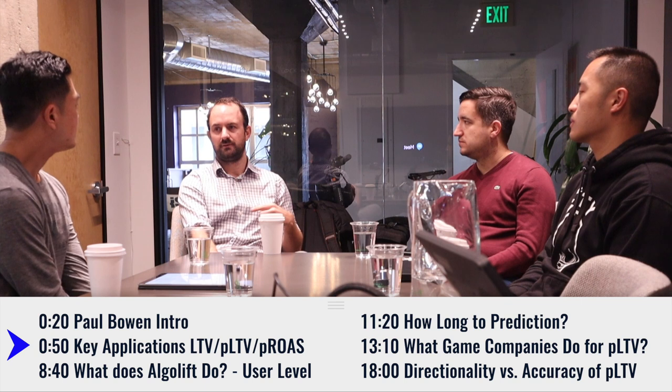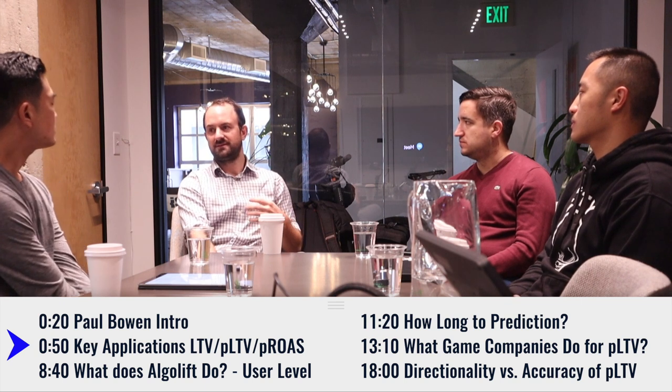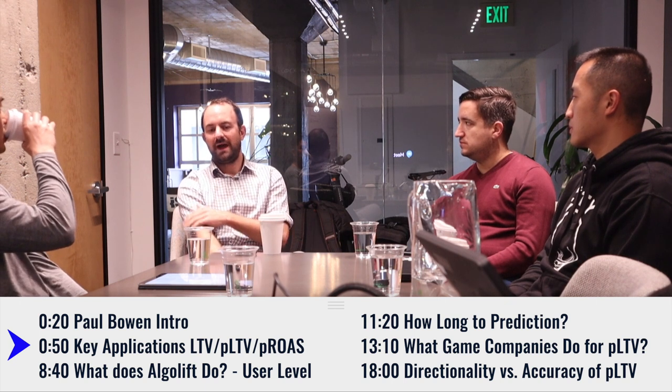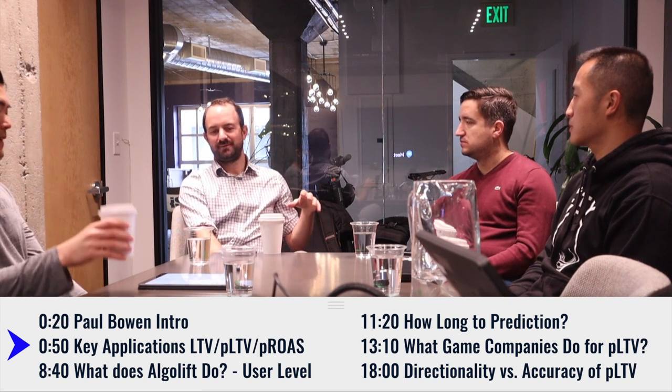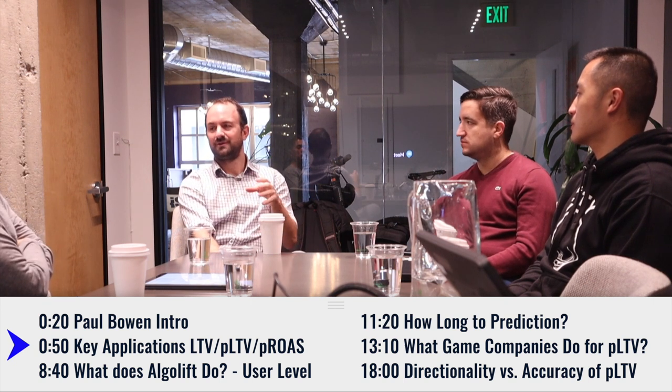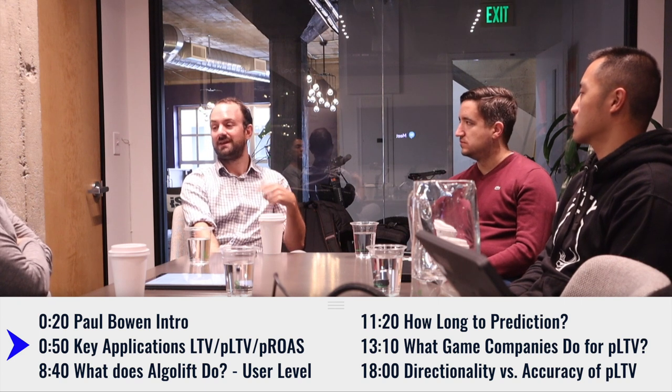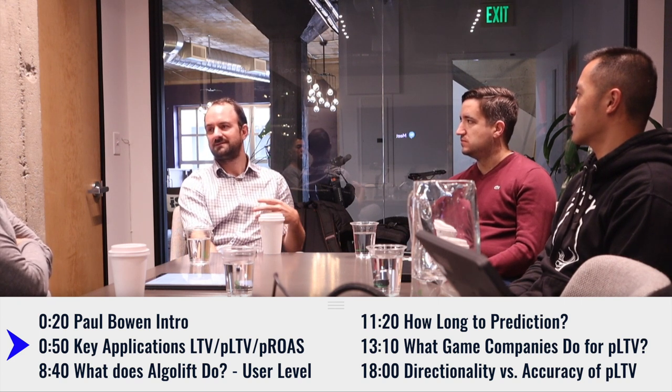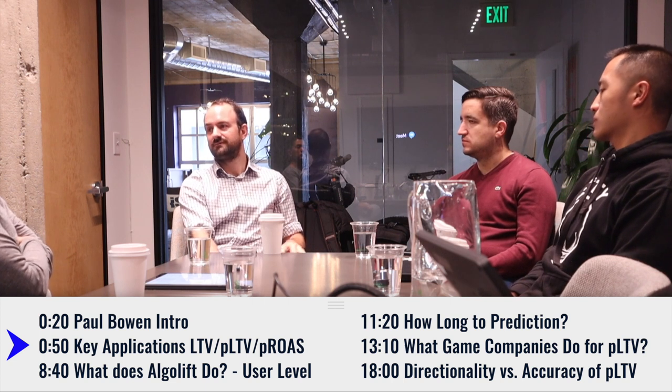LTV matters on every platform. Facebook and Google look at short-term feedback loops — like value optimization bid strategy or app event optimization — to give quick feedback to algorithms to find users for marketing campaigns. However, what the app developer and game developer cares about is really the long-term value of these users. Facebook and Google are concerned about short-term metrics because that's what they're optimizing towards, but game companies care about long-term LTV.